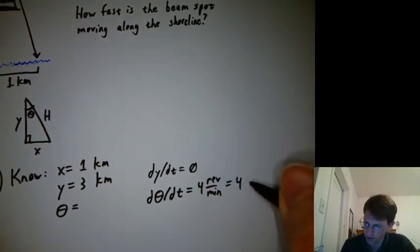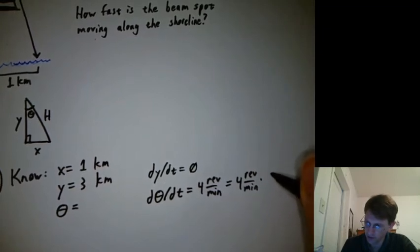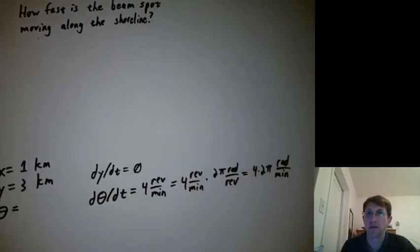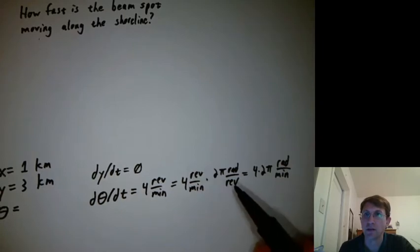So we could say four revolutions per minute times how many radians per revolution? Two pi radians per revolution. And so we get four times two pi radians per minute. See how the revolutions cancel the revolutions and we get radians per minute.